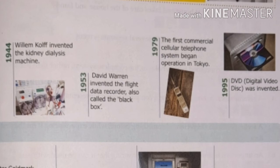The first commercial cellular telephone system began operation in Tokyo in 1979. Next, the DVD — digital video disk — was invented in 1995.